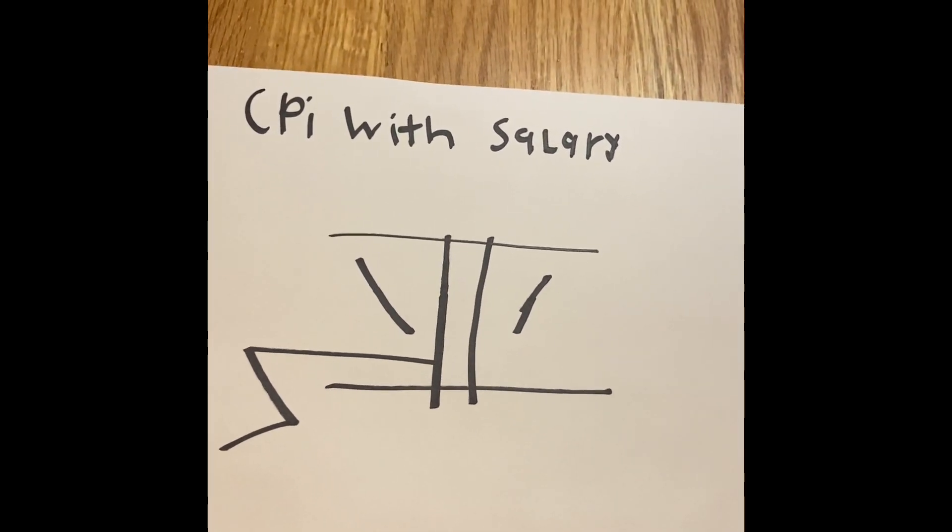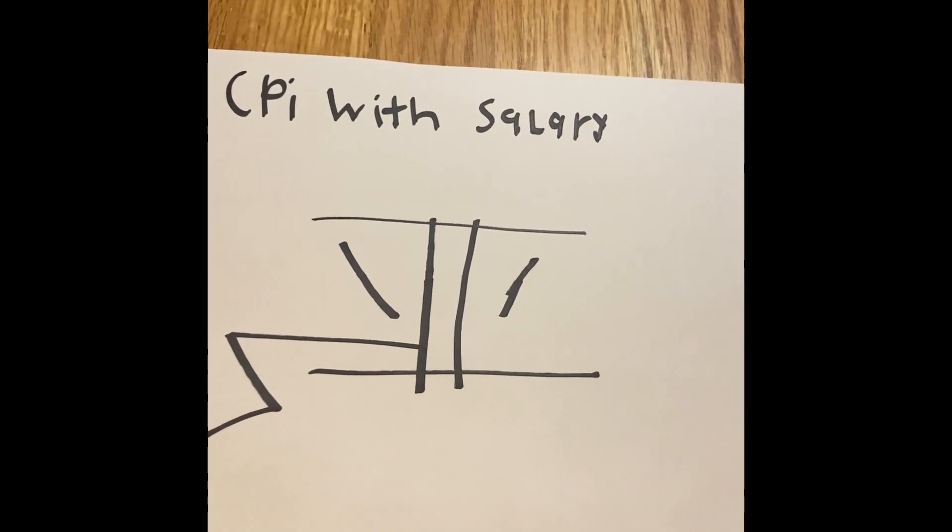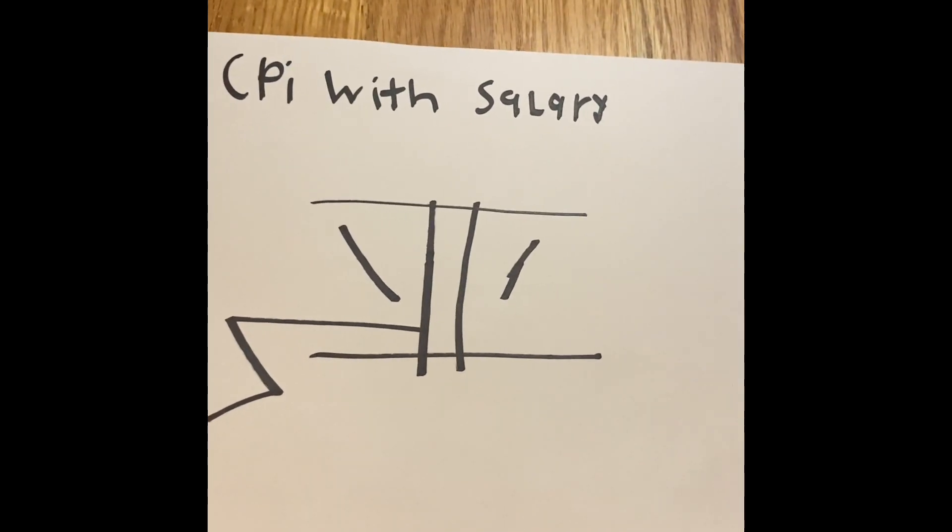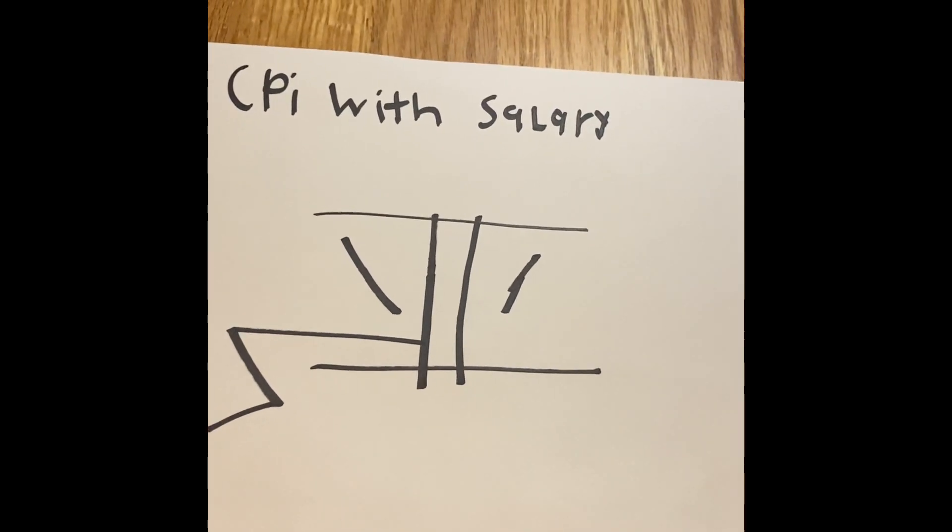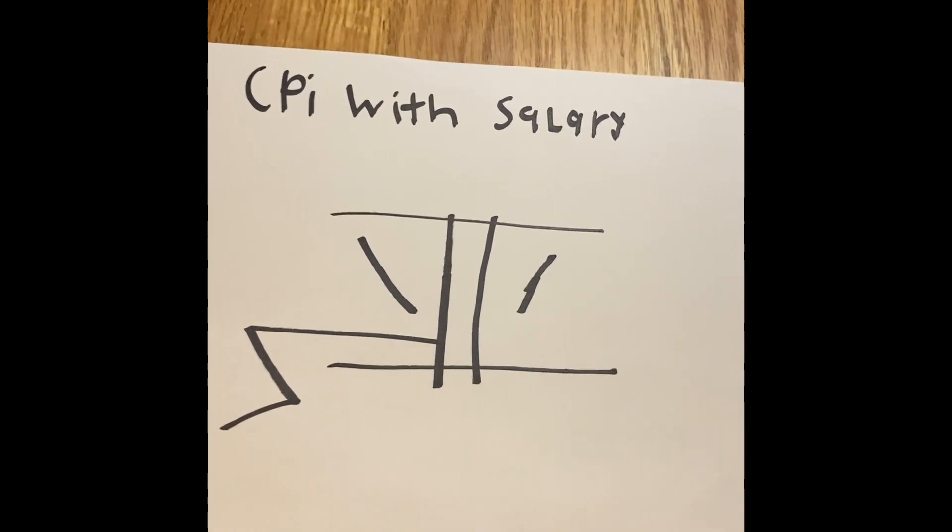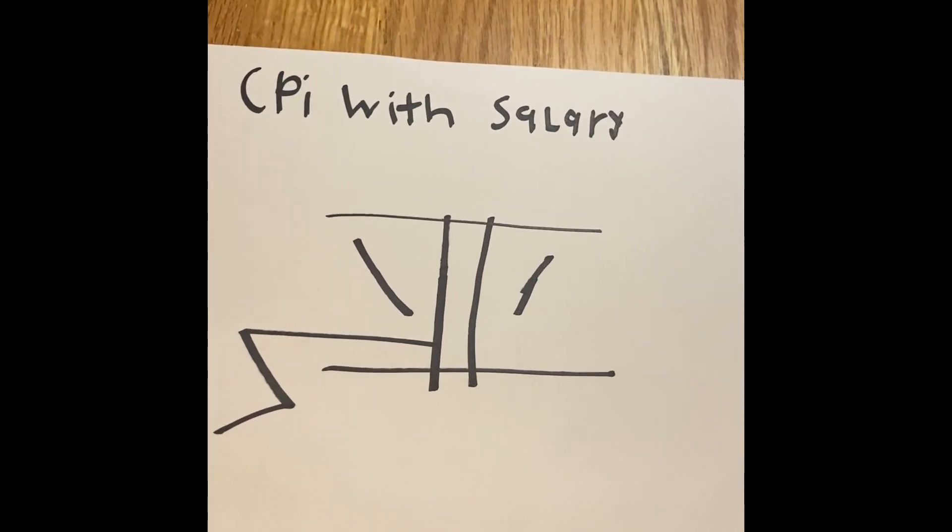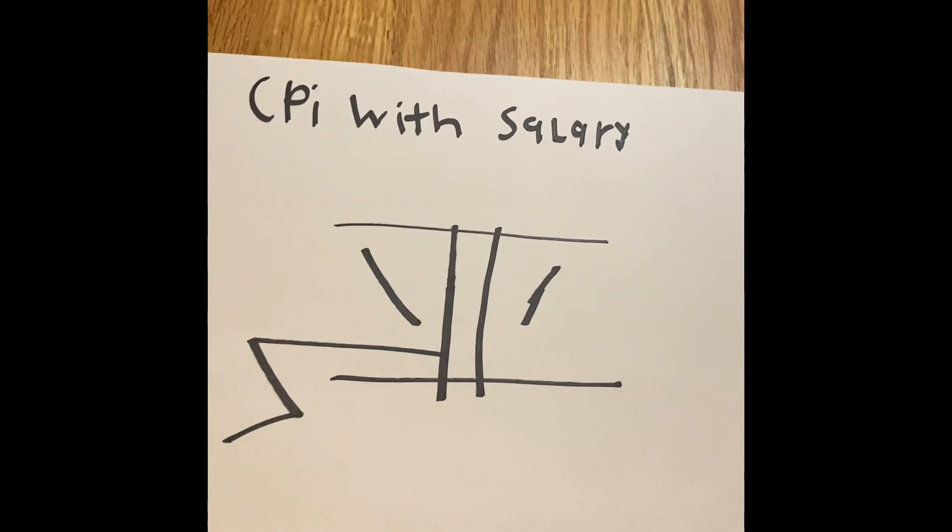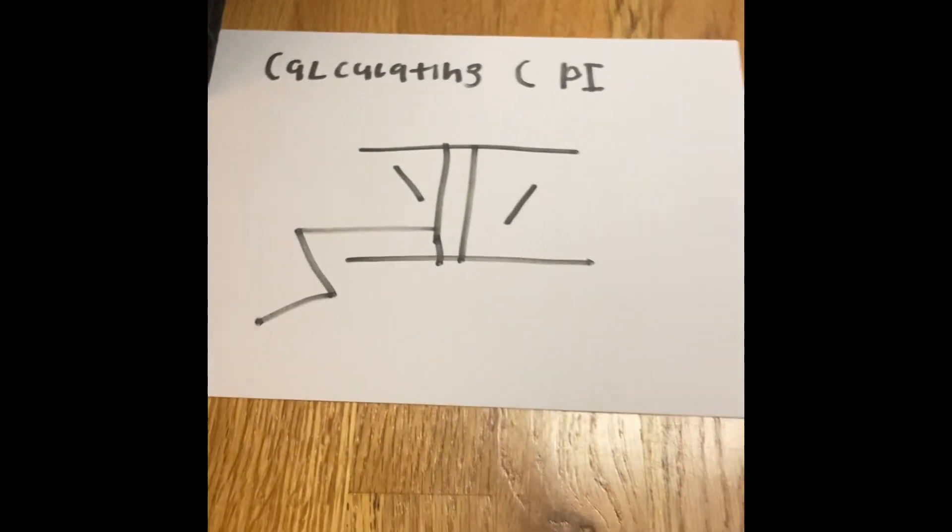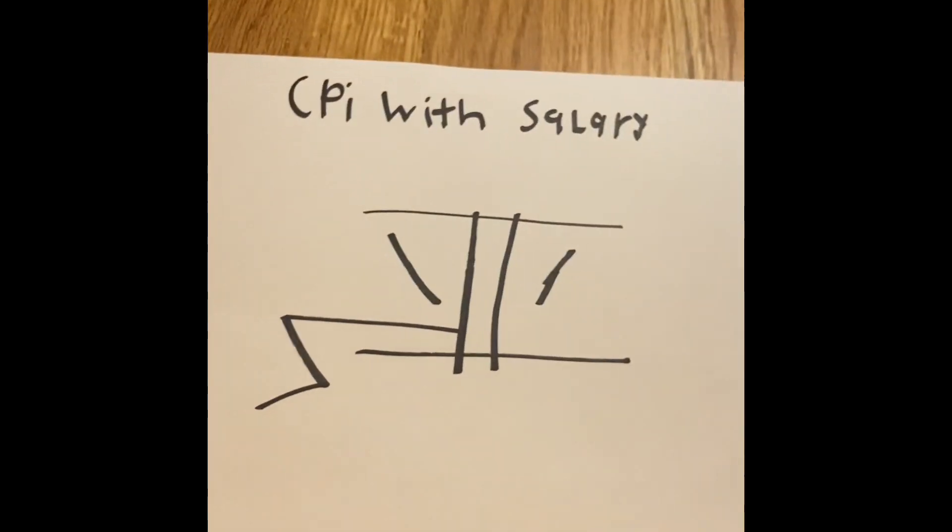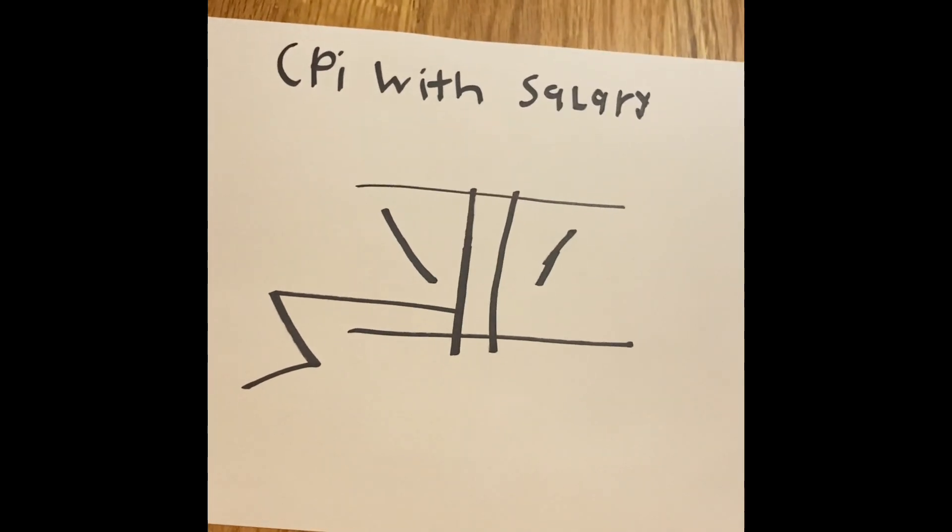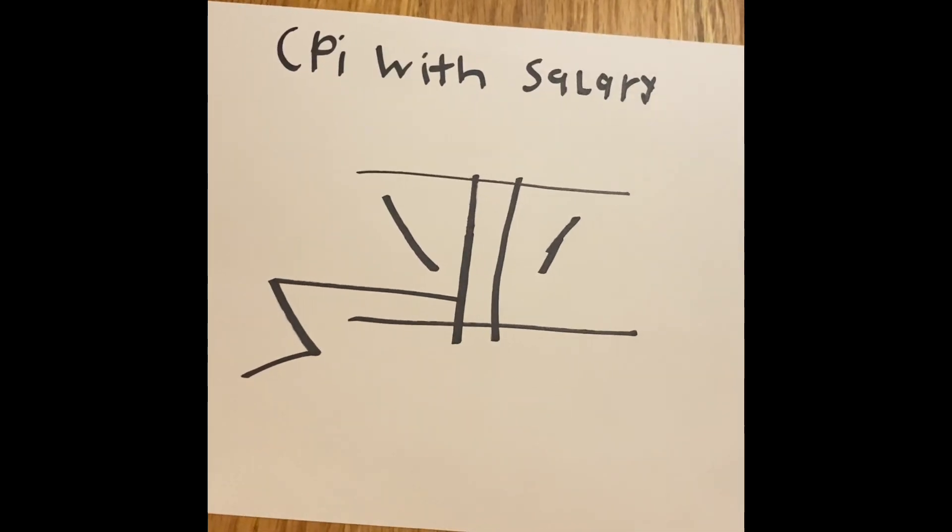We're going to calculate CPI and also look at the different salaries of each year. So two videos ago, we learned about CPI, but last video, we looked at what is the cost of the basket and how can we calculate the CPI consumer price index of that basket. But now we're trying to see if the salary this year is better than 1980. Here's an example.